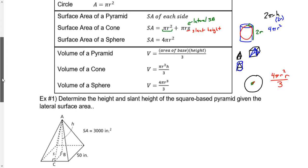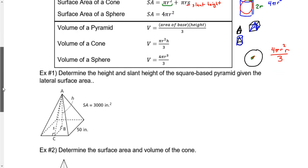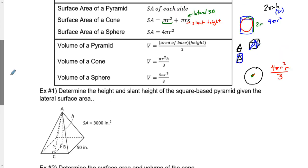So that's some fun background behind the formulas. Now let's actually get into using them. We're going to determine the height and the slant height of a square-based pyramid given the lateral surface area.